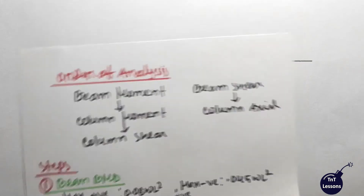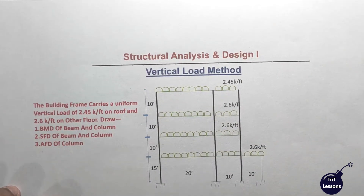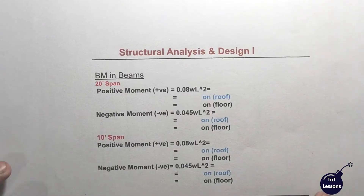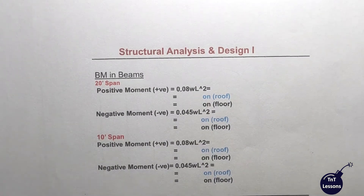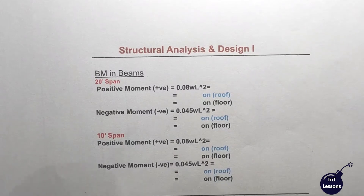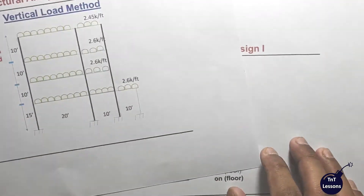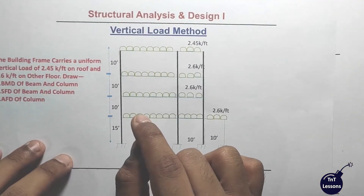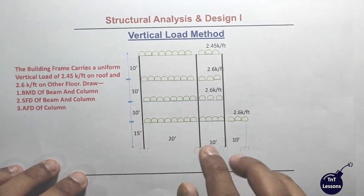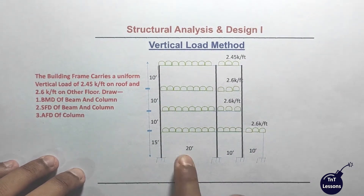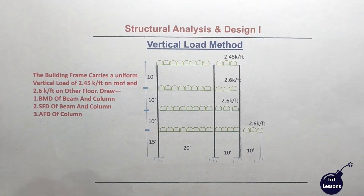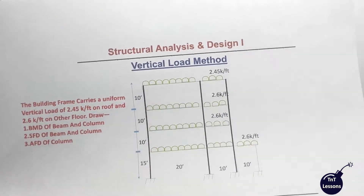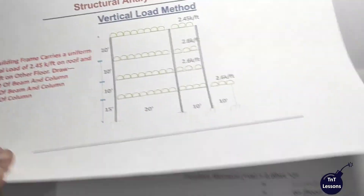This is the condition we have to use to draw the bending moment. Let's start. There are two types of span to look at here. You have 20 feet on the left and 10 feet on the right. So just to be clear: 20 feet, 10 feet — the 20-foot span is greater.